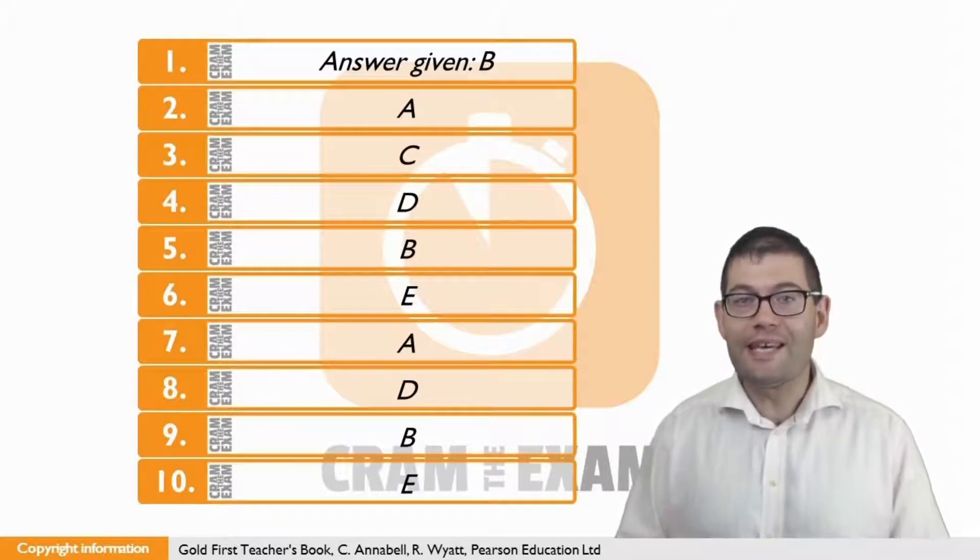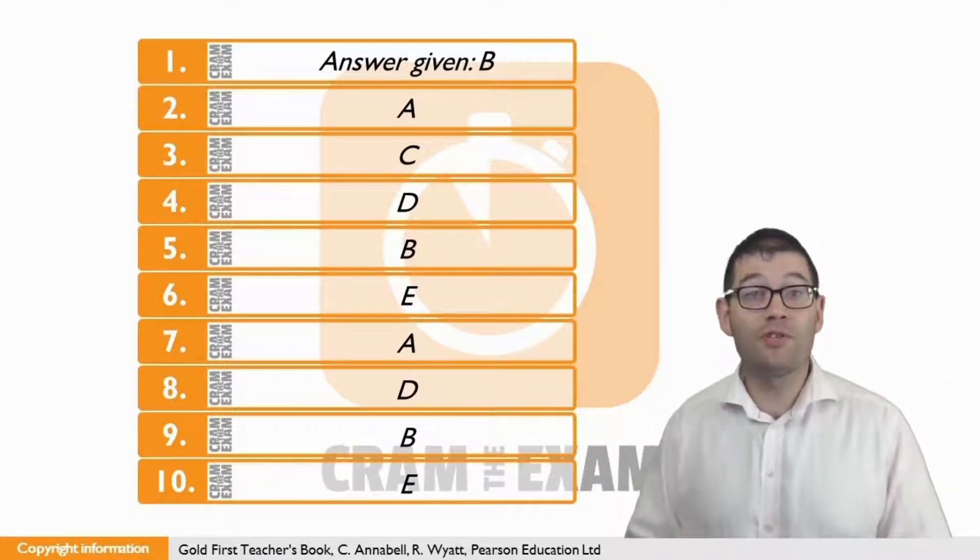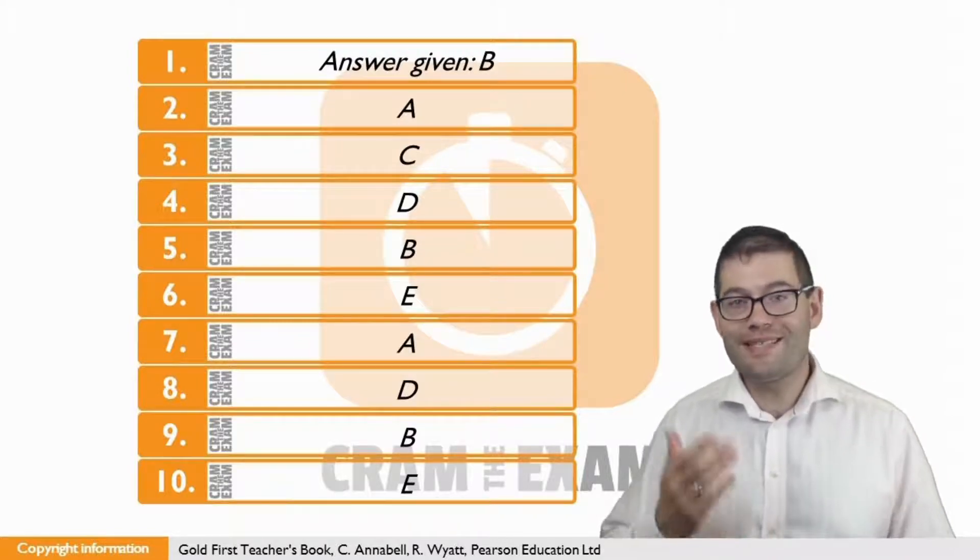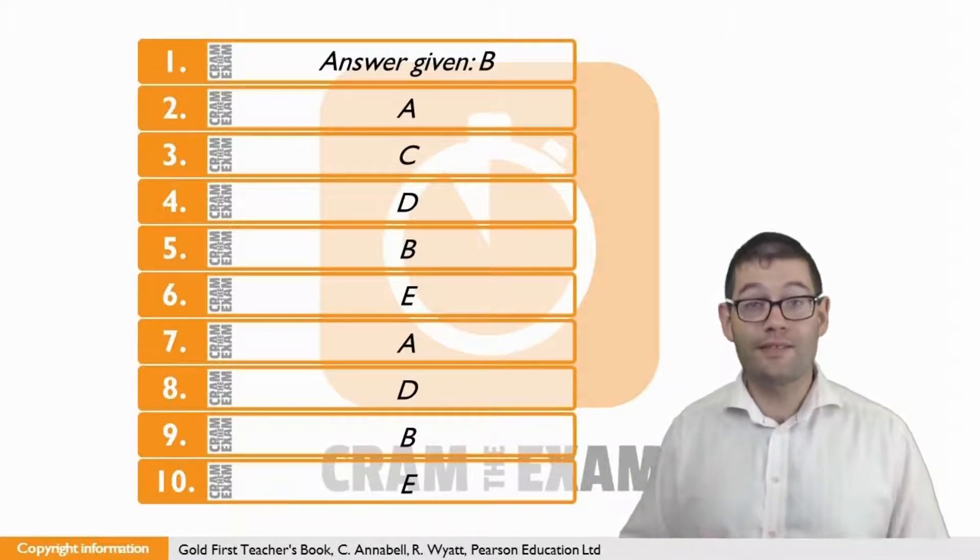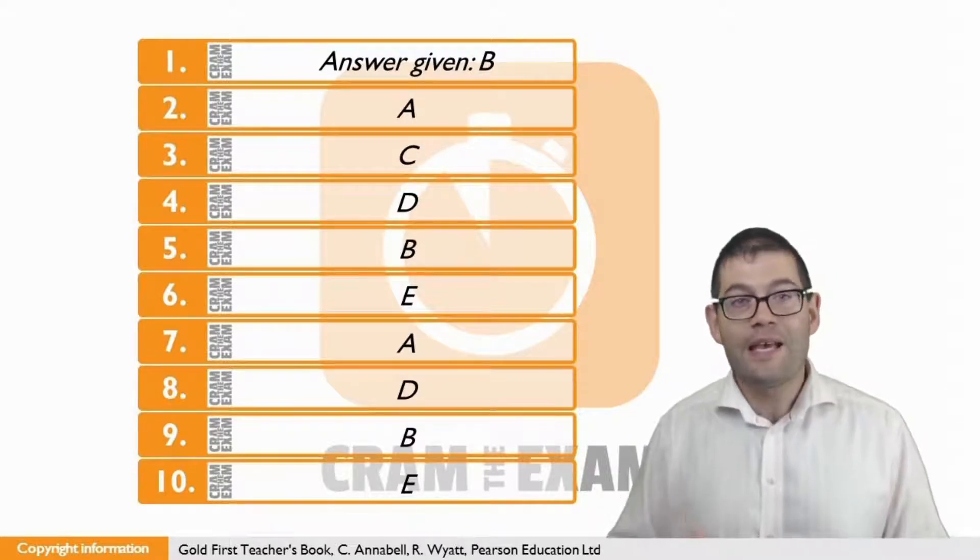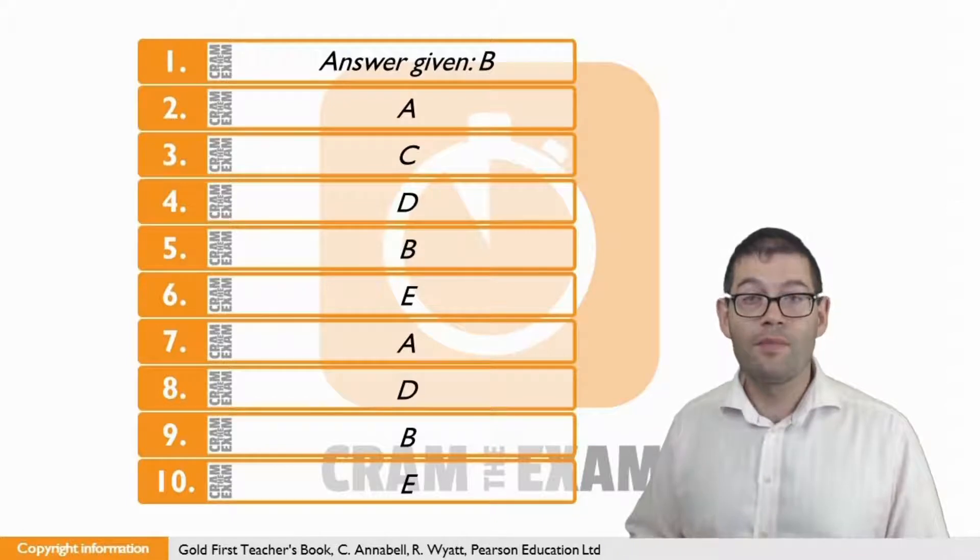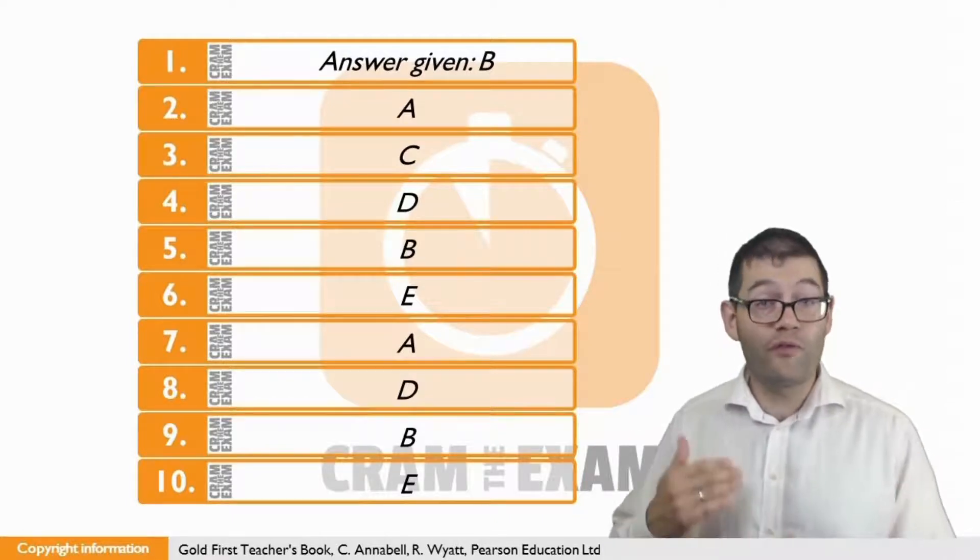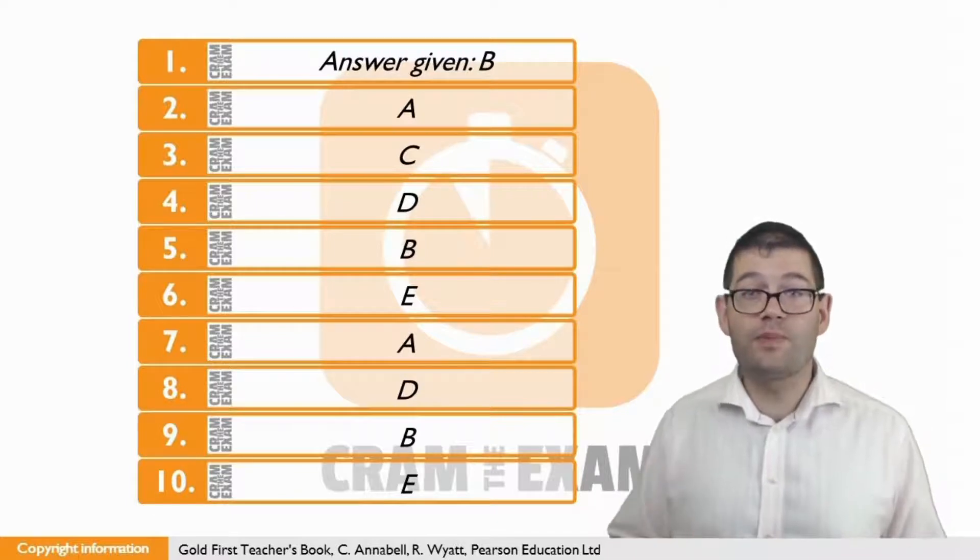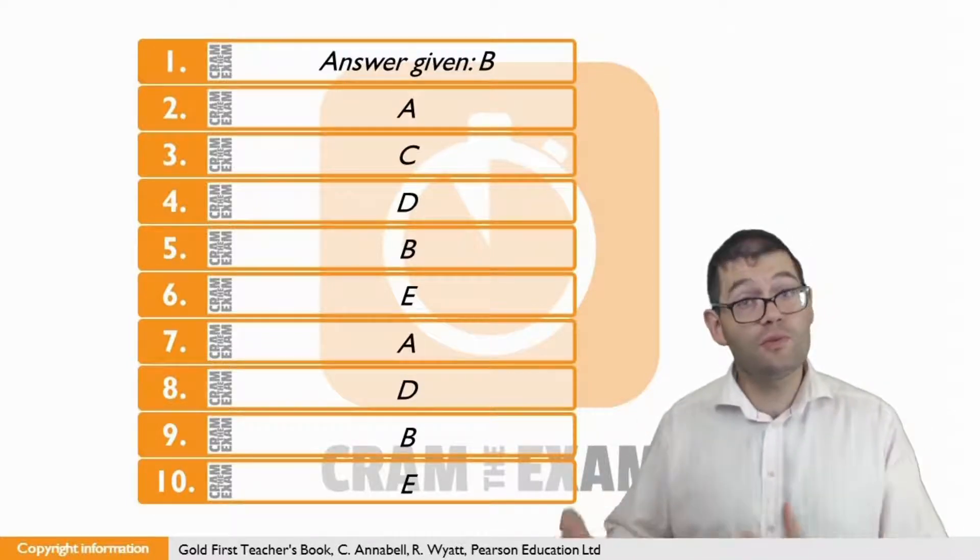For question four, the answer is D. Annie took a while to adapt to a new way of living. We're looking for vocab in the text that means the same as took a while and to adapt, which we can see in question four. And we can find this vocab in D. Adapt links to settle in, and took a while links to four months on. A new way of life can easily be gained from the context of D about moving to another country.